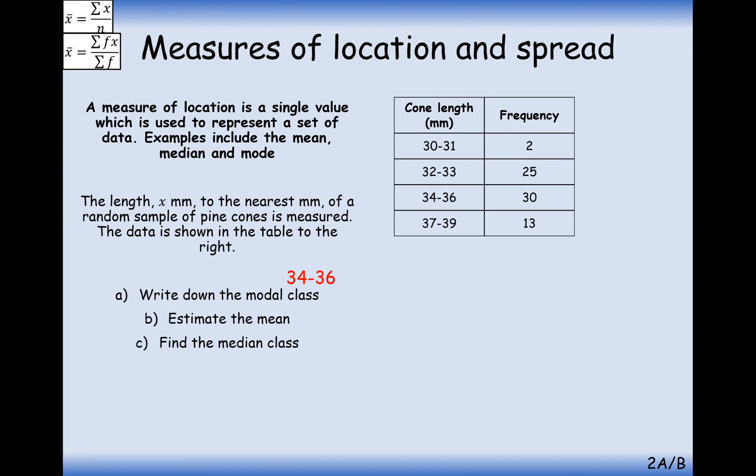Right, so let's have a little look at this question here. The difference between this question and the last one was now we have grouped data, such as this set of data here. So here we're looking at a random sample of pine cones measured to their nearest millimeter. Write down the modal class, well, that's again just the most frequent group, so that's 34 to 36 millimeters.